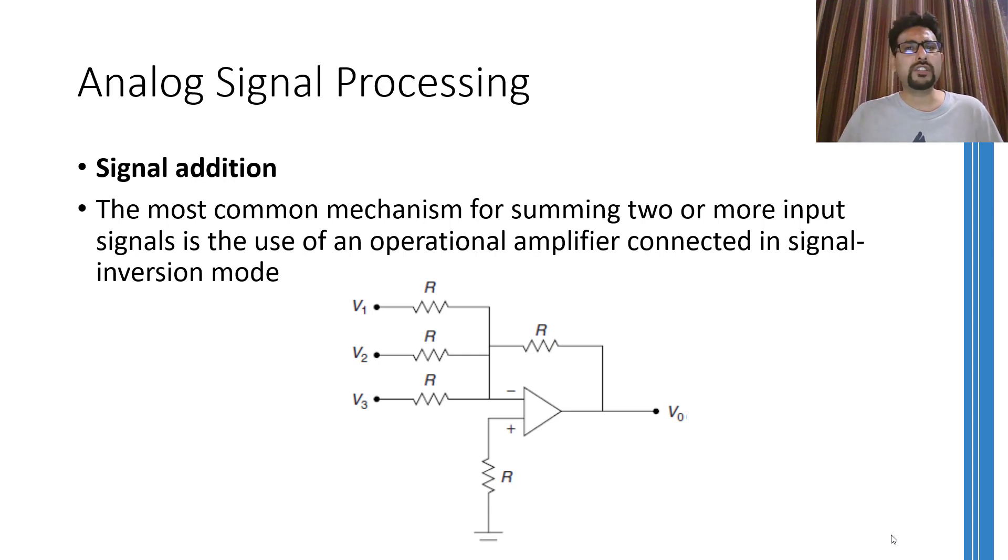Apart from these circuits which I have discussed in this lecture, there are many other active analog signal processing methods and circuits. However, I am going to stop my discussion on analog signal processing over here and will continue with the digital signal processing concepts in the next lecture. I hope you have understood the shallow concepts that I tried to relay in this lecture. It is highly recommended to go through the reference book and revise the concepts of operational amplifiers to better understand these circuits.